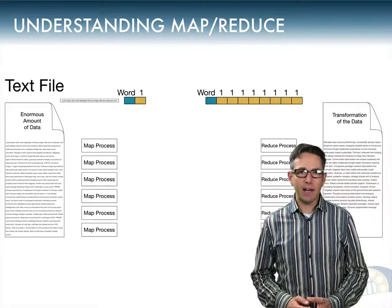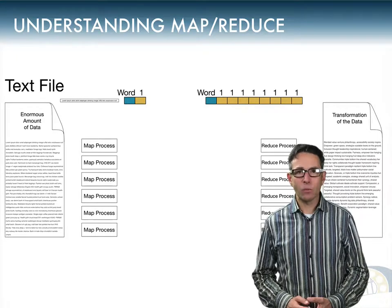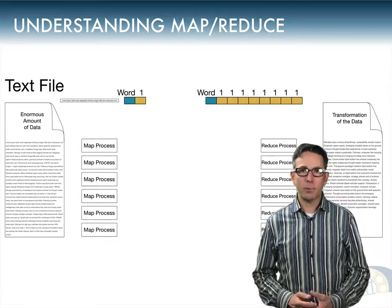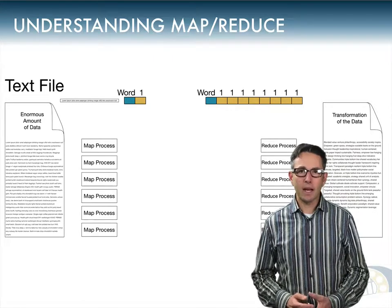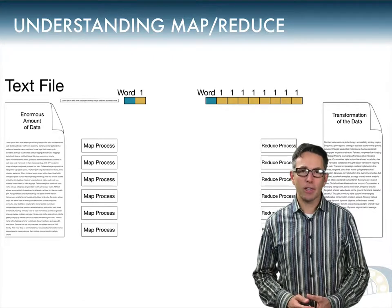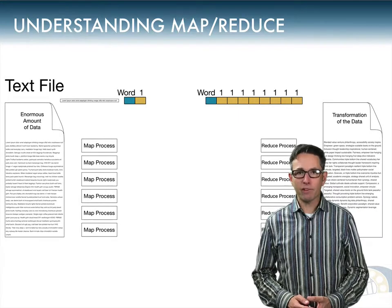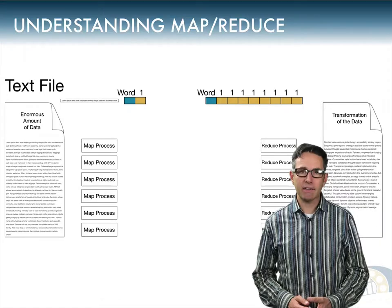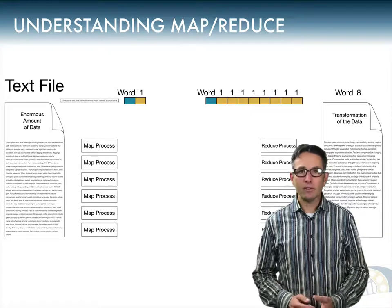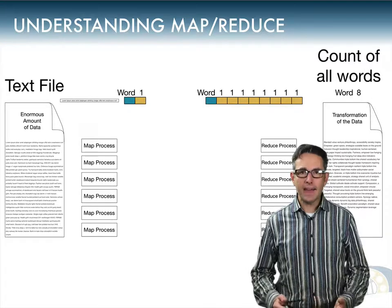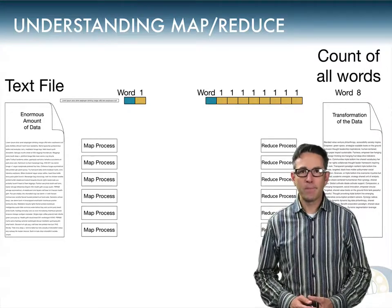The MapReduce architecture takes all those words where the key is the same, brings them together from each Map process, and produces one input to the Reduce process in which the key is the word and there's one value in the list for each output key-value pair that came from the Map process. Since each output value was a one, the Reduce process sees a word followed by a list of ones. The number of ones equals the number of times that word occurred in the input text. The Reduce process outputs the word and a count of those ones — so 'word eight' tells you that word occurred eight times in the document.